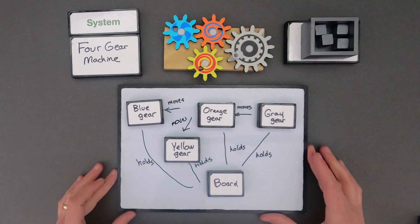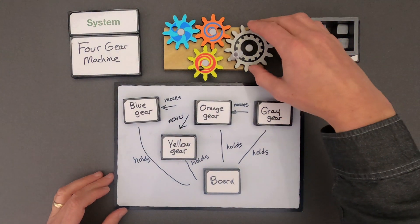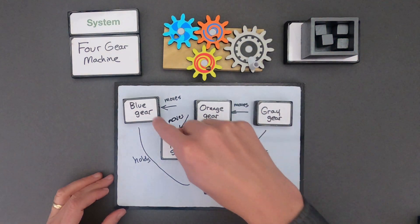So that's my thinking of the system. We could call this a system model. So I've got the gray gear which moves, which in turn moves the orange gear, which moves the yellow and the blue gear.